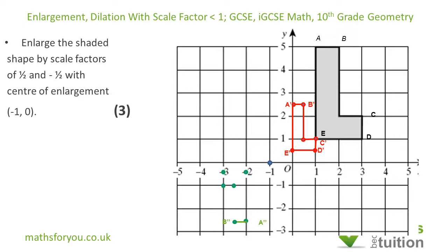For C prime prime — from the center of enlargement, C is 4 to the right and 2 up, so with scale factor minus one half I move 2 to the left and 1 down. That gives C prime prime.